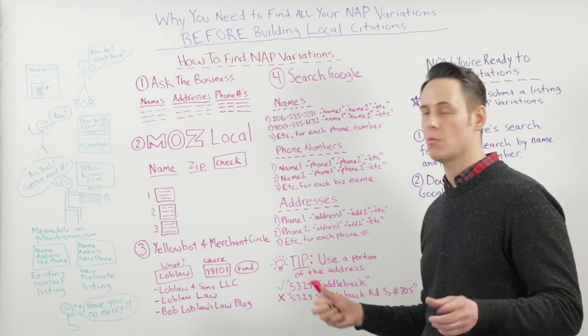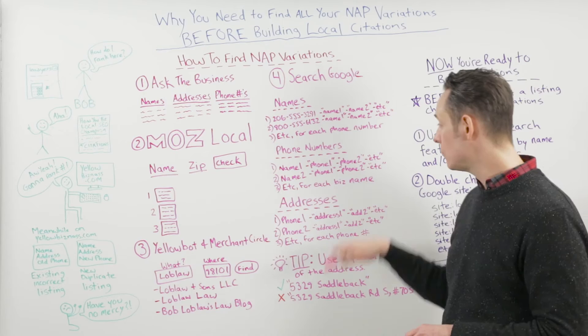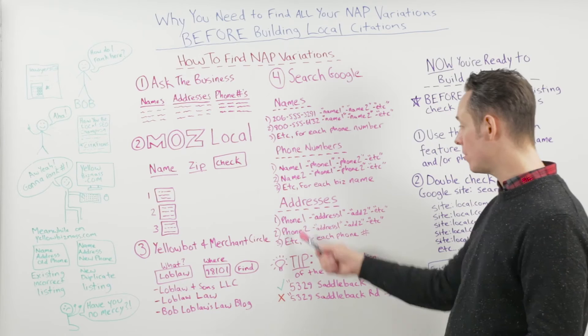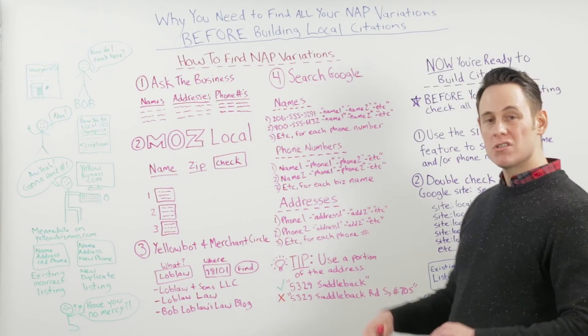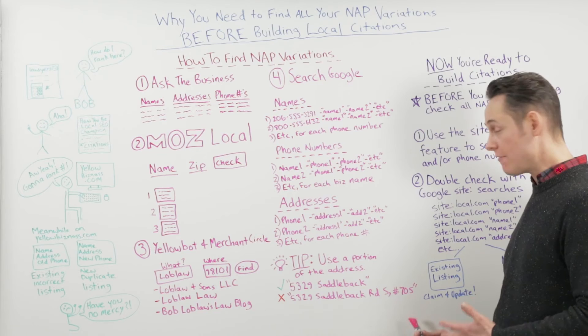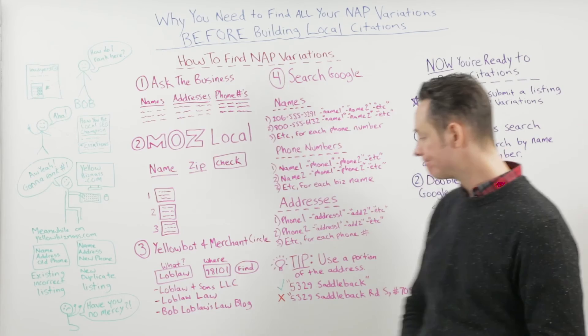One issue with searching by business name is it tends to surface a lot of pages that mention the business without a phone number, which is common. So in this case, I scan the results looking for obvious business directories — like Yelp or Foursquare. To find any addresses you missed, put in a phone number and exclude the addresses you're already aware of, doing that for each phone number. An important tip with addresses: don't use the full address in quotes, as it will only match exact strings. Instead, just use the portion common to all sites — like '5329 Saddleback' rather than the full suite address.